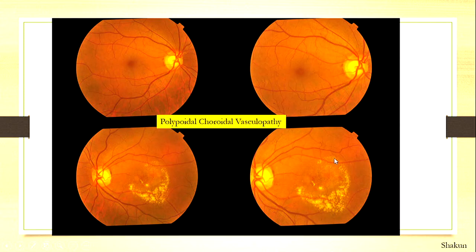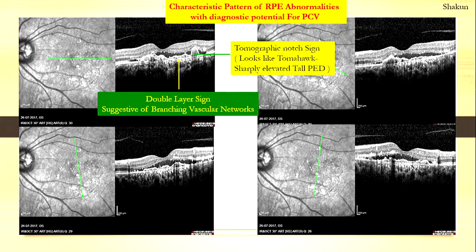Now when you see this kind of picture — a lot of exudation or a lot of hemorrhages — start looking. What is the OCT like? Otherwise you'd say you have to do an ICG to make a diagnosis of polypoidal choroidal vasculopathy. The OCT, if you have a good one, can give you a very good idea. You see this peaked RPE detachment? This is called the tomahawk's knot sign — a peaked PED is a sign that you're dealing with a PCV. This kind of layered, shallow RPE detachment with another layer below it — that's called a double layer sign — is suggestive of branching vascular networks. When you have this kind of combination, think in terms of PCV and treat accordingly.